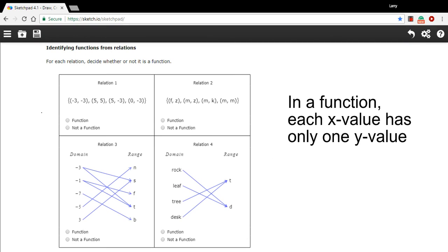In this problem, we're being asked to look at some relations and decide whether or not they're functions. A function is a special kind of a relation, and it has this property: in a function, each x value can only have one y value. If it has two different y values or more than two different y values, then it's not a function.